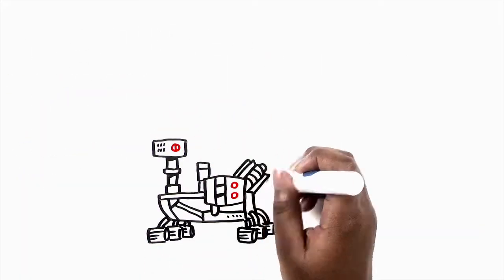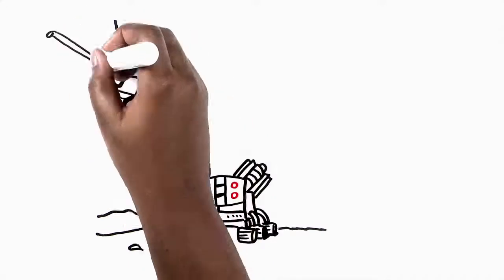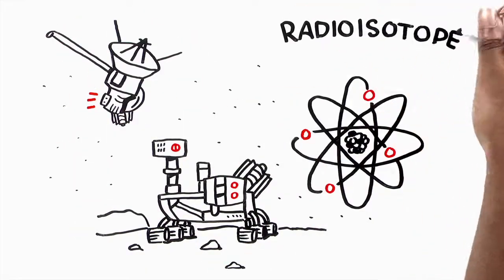That's why NASA's Curiosity rover on Mars and other NASA spacecraft that explore the solar system use something called radioisotope power.